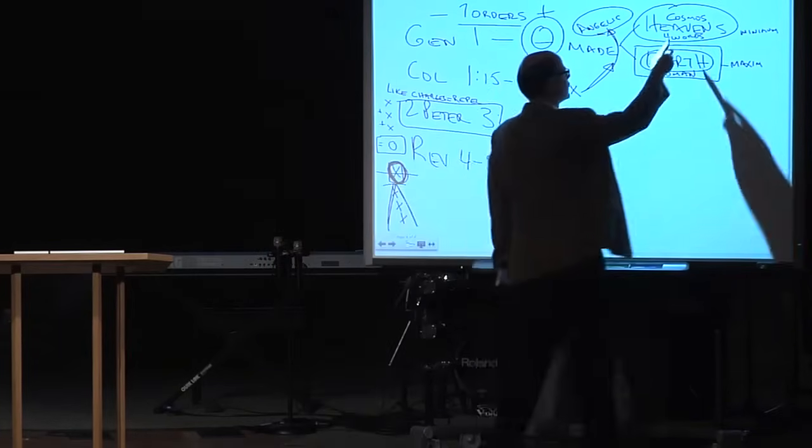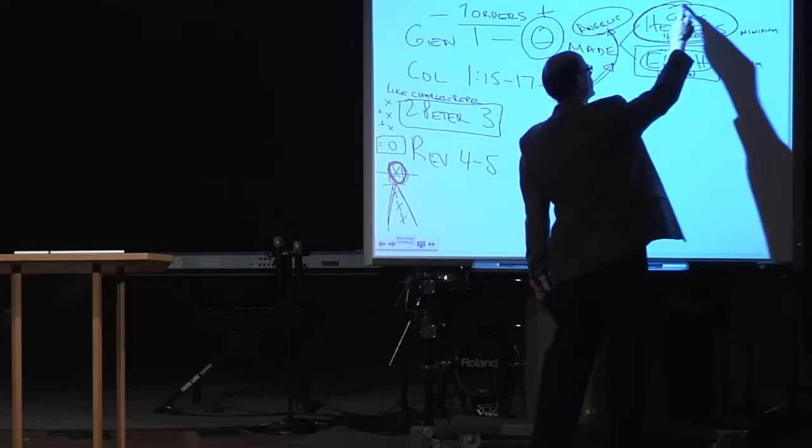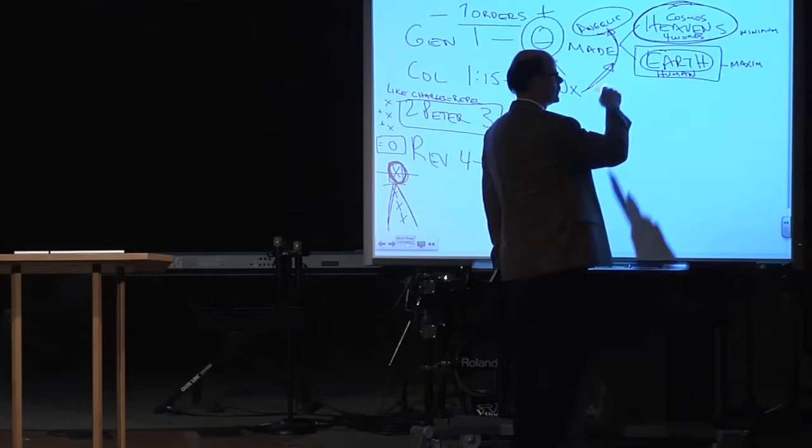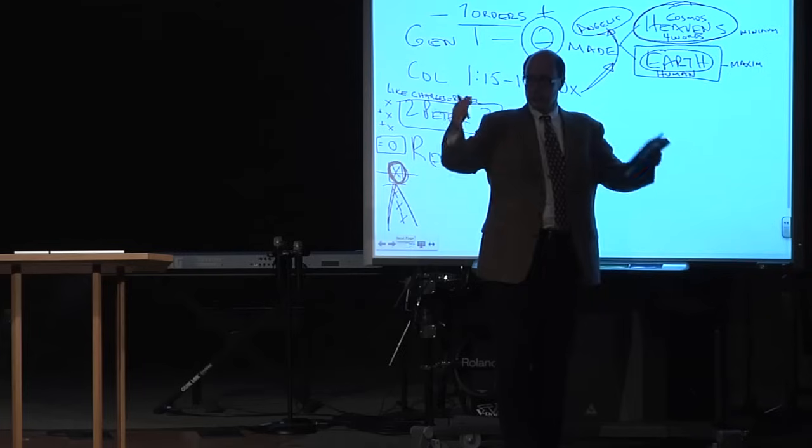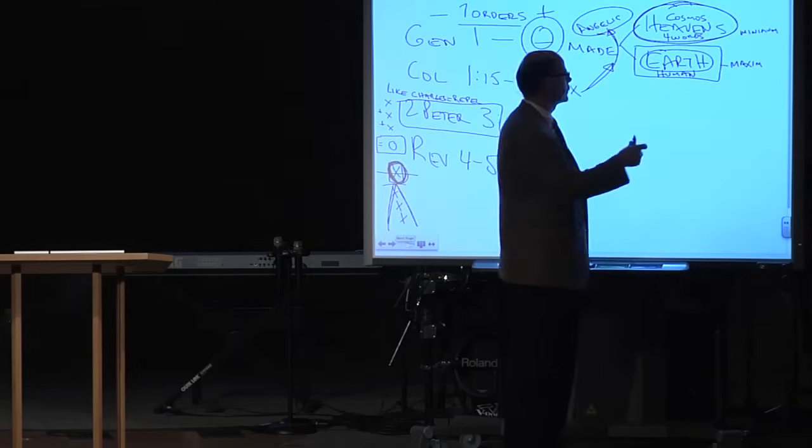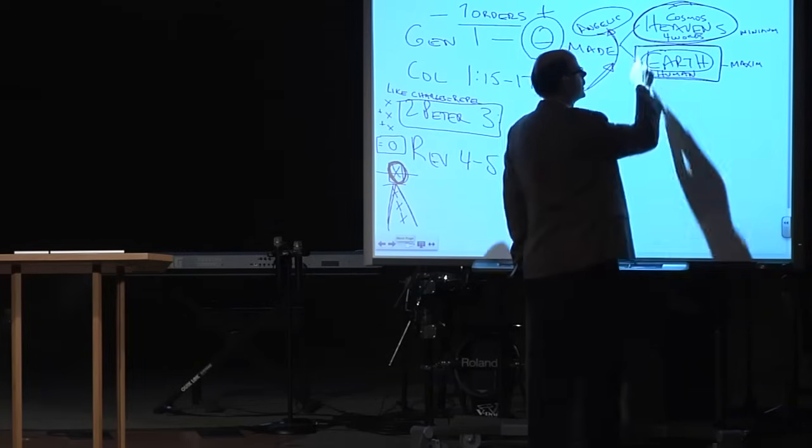So Moses had it. Jesus, I mean Paul had it. Of course Jesus had it because he did it. And now Peter has it. So they all agree with this, that the heavens, created with only four words, actually one word, God said, you know, come into existence, but four words describe it, and the earth. It doesn't say, and all the planets and all the people groups and all the various binary stars, they have yellow suns so they can have life.